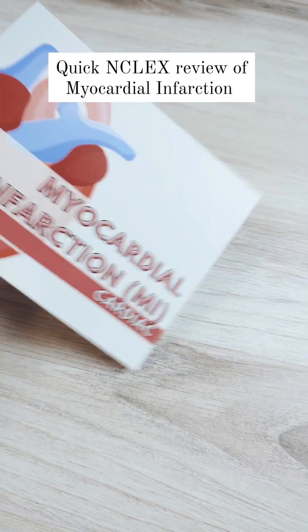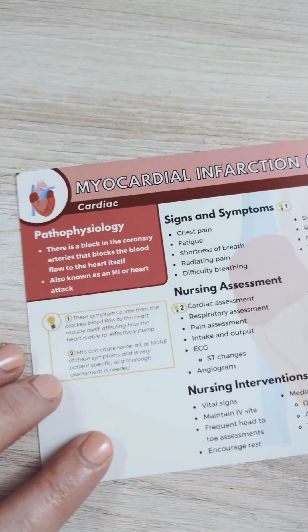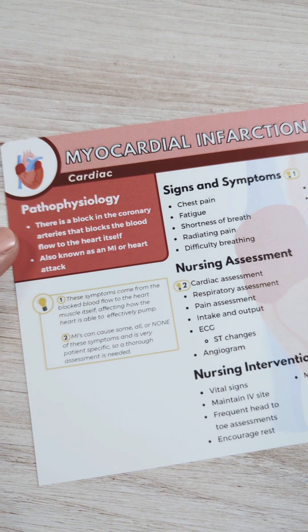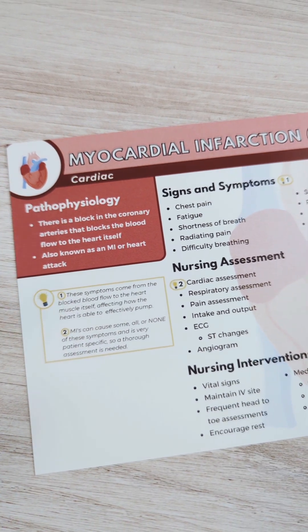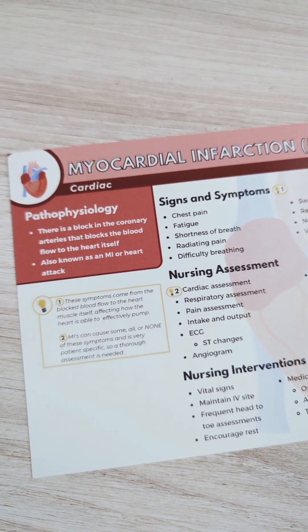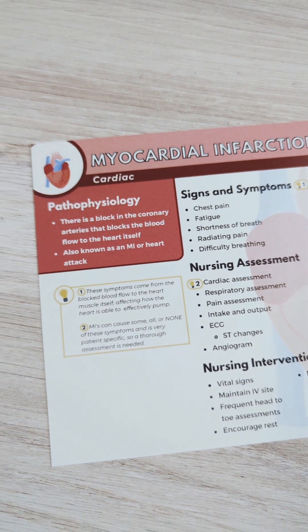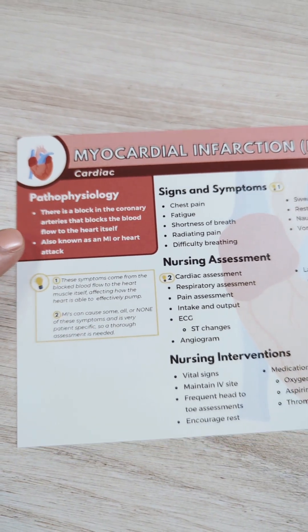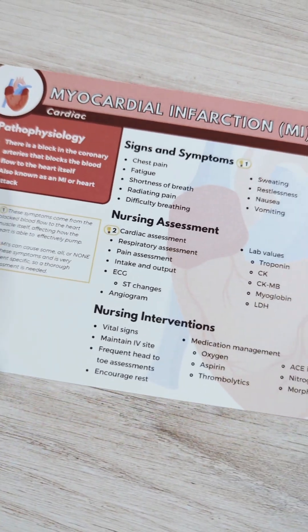Let's do a quick review of myocardial infarction, or an MI. Basically, what's happening is there is a blockage in the coronary arteries that supply the heart muscle itself with blood, so the heart is not getting the blood flow that it needs.